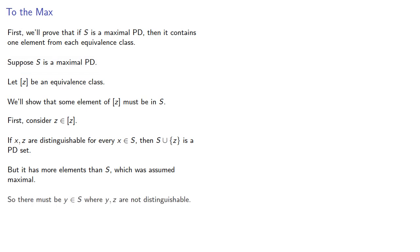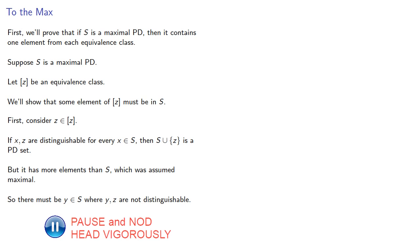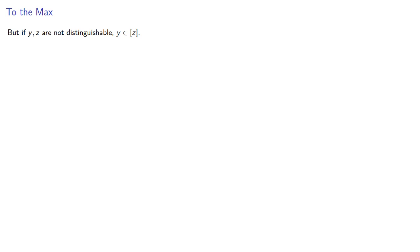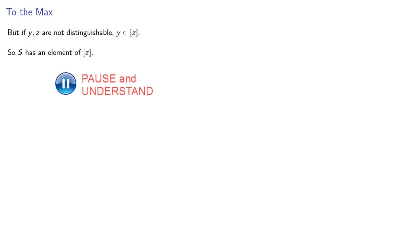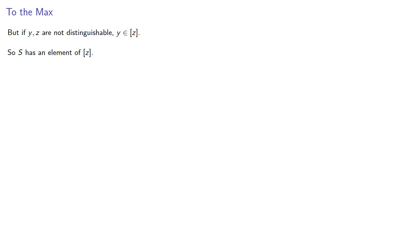So there must be a Y in S where Y and Z are not distinguishable. But if Y and Z are not distinguishable, then Y is in the equivalence class of Z, so S has an element of that equivalence class. Consequently, S contains an element from every equivalence class.